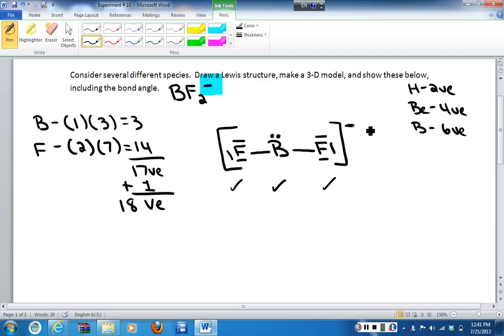So, now that we've done the Lewis structure, we need to do the 3D model. So, I look at my central atom, and I see that there are 3 regions of electron density around the boron. And, I know that this narrows down my geometry to 2 different types. But, I have to look what kind of 3 regions of electron density are around the central atom.